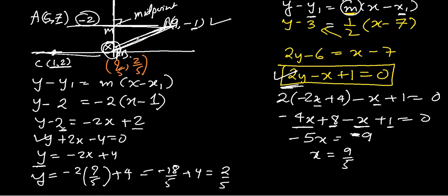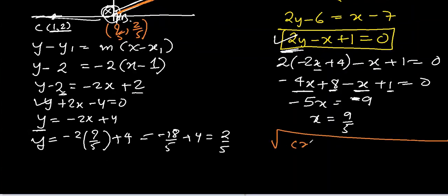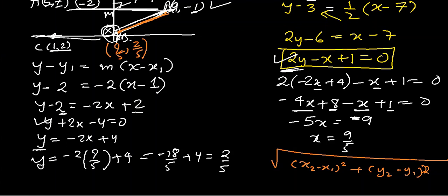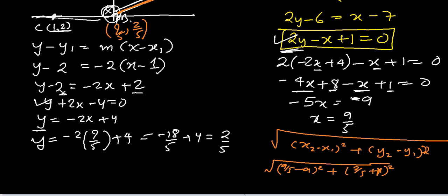Now we have to find the distance BX. The distance formula is the square root of (x2 minus x1) squared plus (y2 minus y1) squared, and we know all the coordinates. So we compute the square root of (9/5 minus 9) squared plus the corresponding y terms. Putting everything into the calculator gives 7.33 units — that is the distance BX.